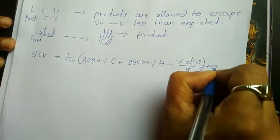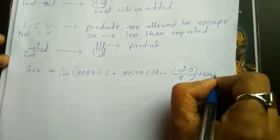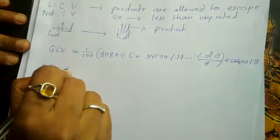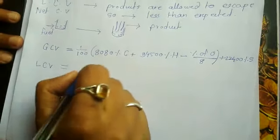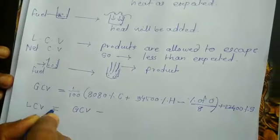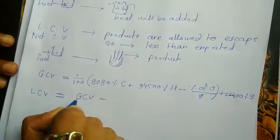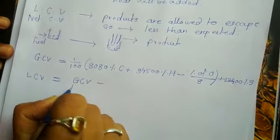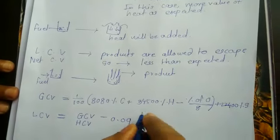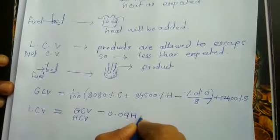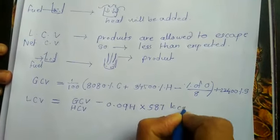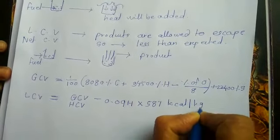While low calorific value is calculated by using relation: low calorific value is equal to gross calorific value or high calorific value minus 0.080 hydrogen percentage into 587 kilocalorie per kilogram or calorie per gram.